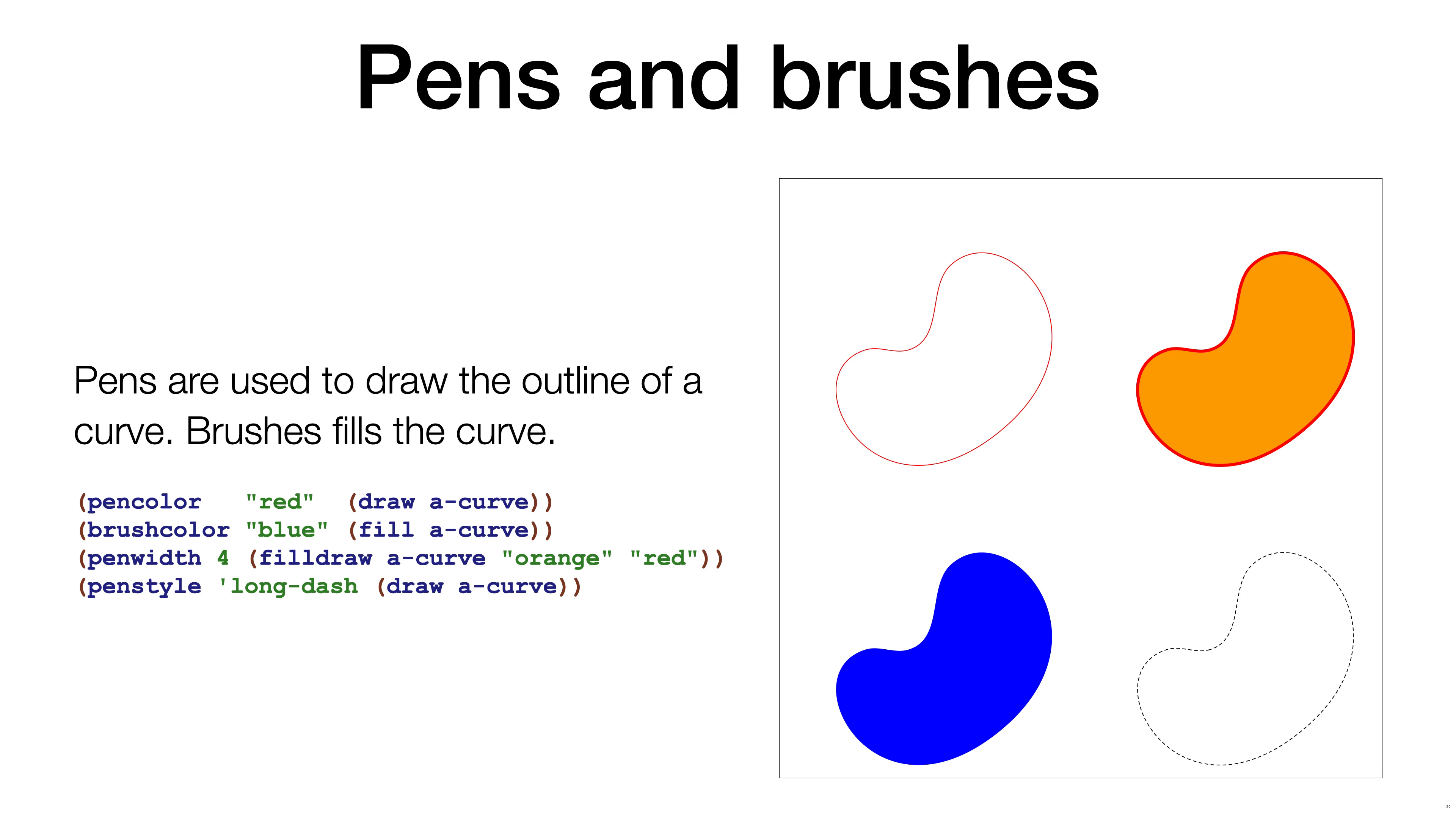We have now seen how to construct curves. When we have a curve, we can draw the curve. The operation draw simply draws the curve using the default pen. If we use fill, the default brush is used to fill the area given by the curve. Sometimes we want to both fill and draw the outline at the same time, so the operation fill-draw does exactly that.